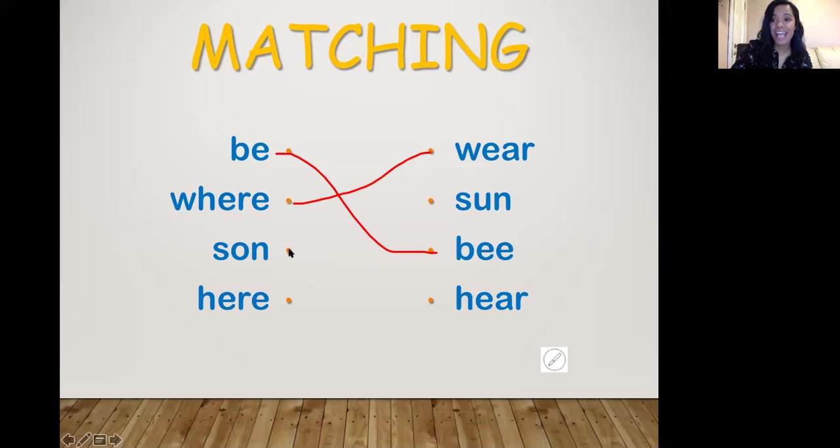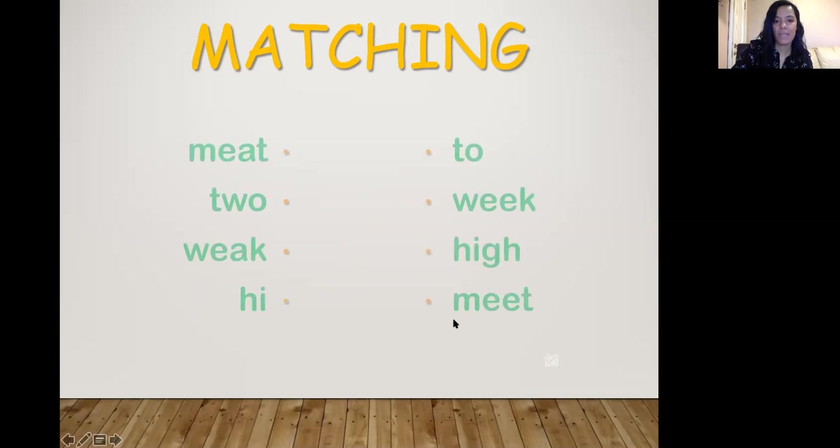So now we have sun and son. He is my son. The sun shines very bright in the sky. It's a very hot day. I hope the sun comes out today. And then we have here and hear. So here and here. Boom. Excellent. We'll erase those. Excellent job. And here we go. Next one.